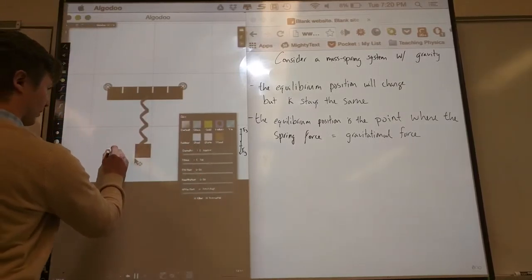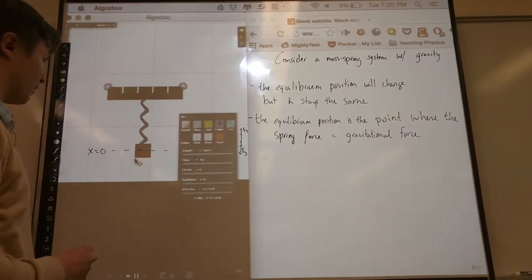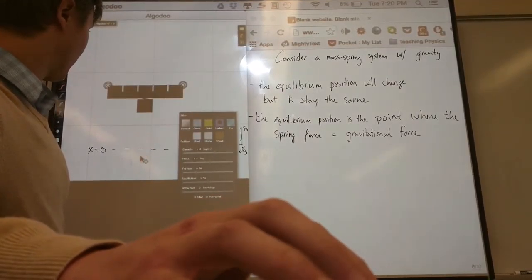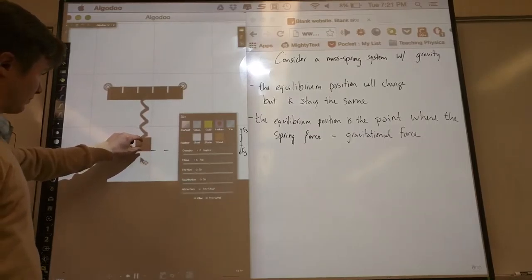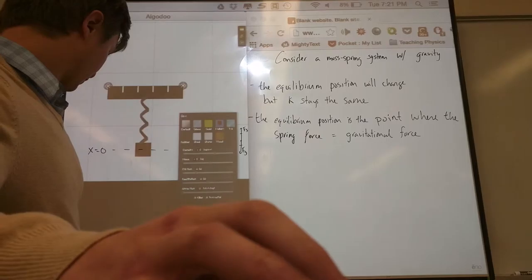This would be my equilibrium position where I could say that's where x equals 0. So if I tug on this thing, I'm measuring the displacement from this x equals 0 line. Now I have some damping, so that's why it eventually comes to a stop. Now what if I take my mass and I decrease it?